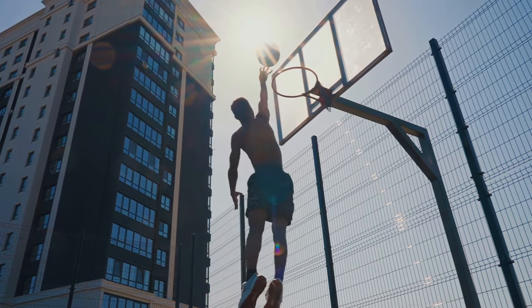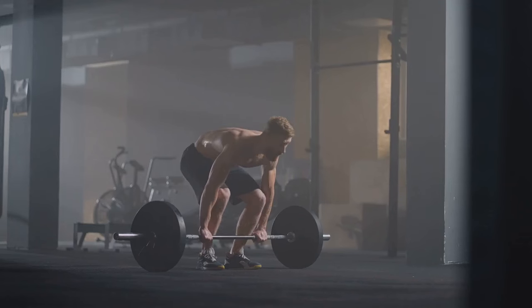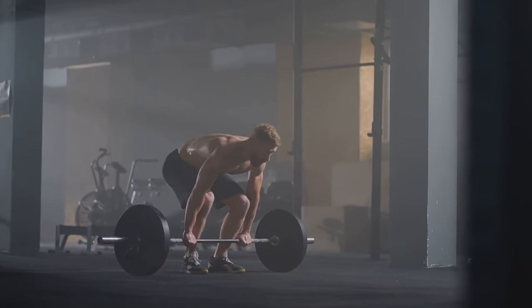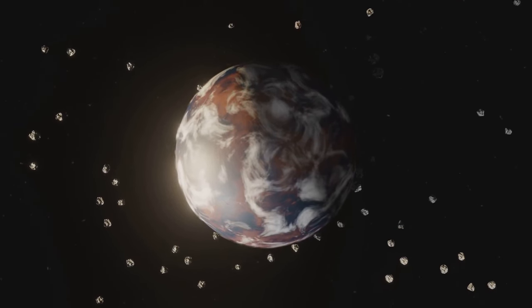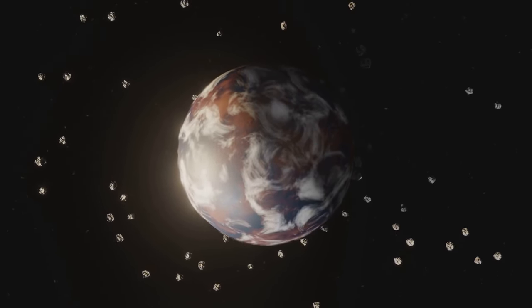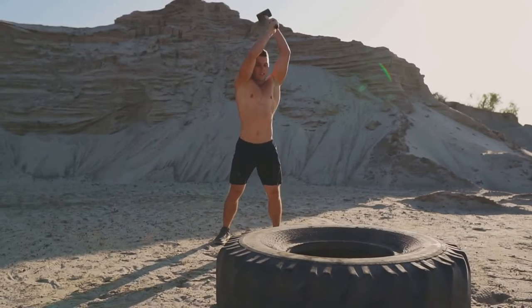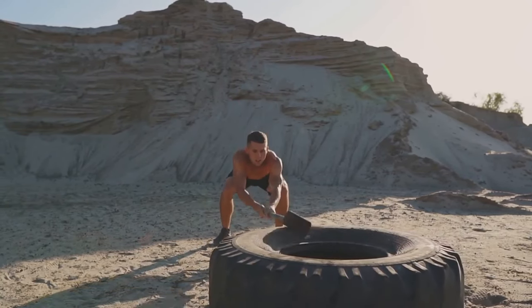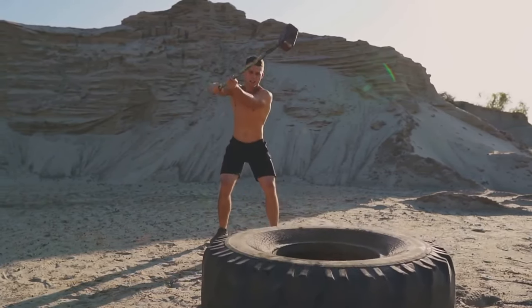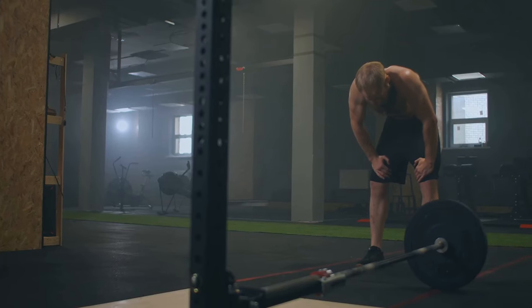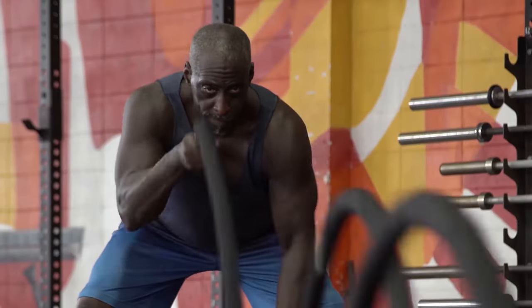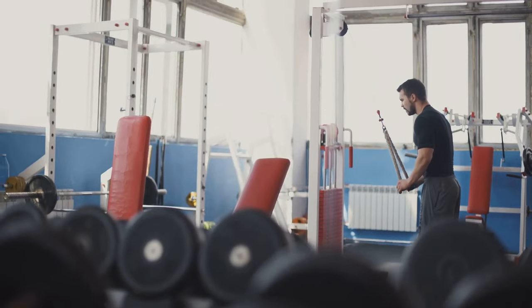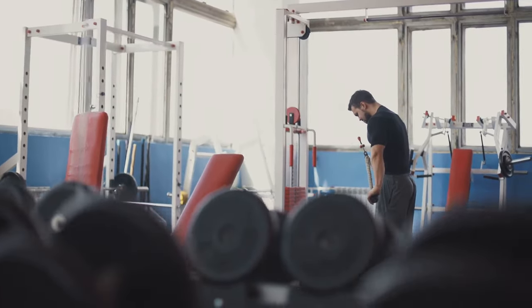Imagine a world where you could dunk a basketball with ease or lift weights that would make Olympic athletes jealous. That's just one of the potential perks of living on a super-Earth like Gliese 581c. The increased gravity would make us all incredibly strong just from going about our daily lives. Of course, there would be some downsides to this super-strength. We'd likely tire more easily and our bones and joints would be under greater stress. But hey, who needs to go to the gym when you live on a planet that's basically one giant weight room?